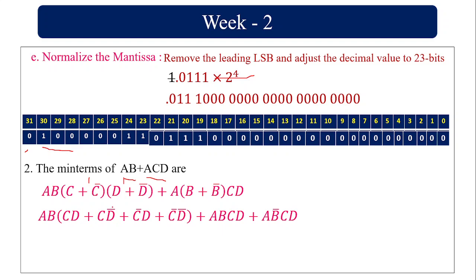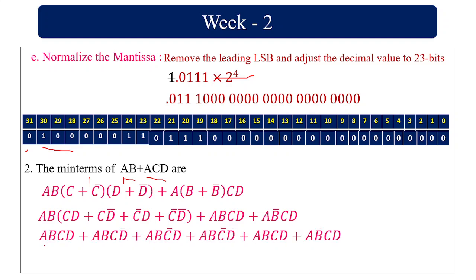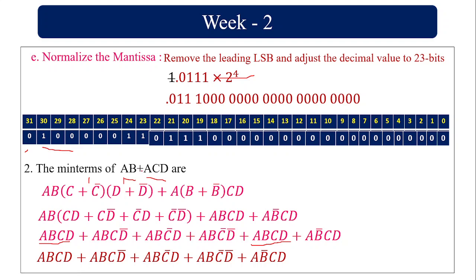Expanding (C plus C bar) into (D plus D bar) gives CD plus C bar D plus C bar D plus C bar D bar. Multiplying throughout by AB gives: ABCD plus AB·C bar·D plus AB·C bar·D plus AB·C bar·D bar. For the ACD term, B is missing, so I multiply by (B plus B bar). Expanding gives the remaining min terms. Since ABCD appears twice, it is written once. The final min terms each have all 4 variables in original or complemented form.